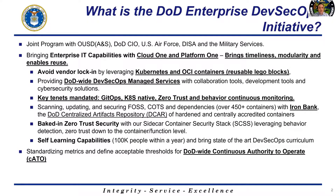We also created Iron Bank, which is the open-source container registry where we harden and secure 450 containers — both open-source and commercial tools — so they can be consumed with hardened configurations and hardened operating systems. We use Universal Base Image 7 and 8 from Red Hat as well. We created this sidecar container security stack that does behavior detection and zero trust at the container and function level, including for people using things like Knative on Kubernetes.